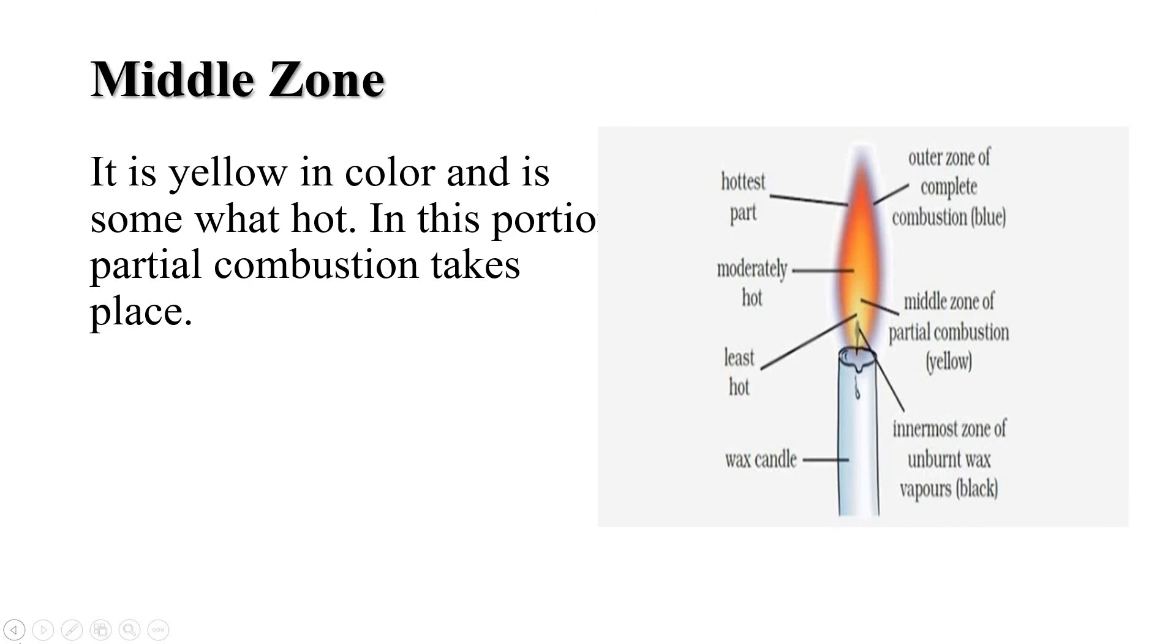And the second zone is middle zone. The central zone of the candle flame is bright yellow and luminous. In this zone, wax vapor undergoes incomplete combustion because not enough air is present here. The incomplete combustion of wax vapor produces carbon particles and these unburned carbon particles get heated up and start glowing. These glowing carbon particles make the flame luminous. Thus, the central zone of the candle flame is luminous due to incomplete combustion of wax vapor in this zone and this part of the flame has moderate temperature.